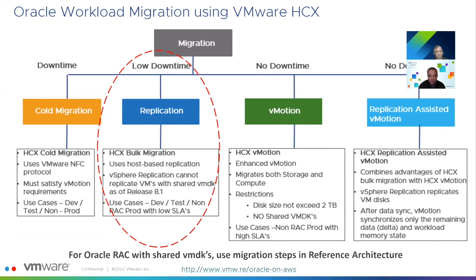HCX is included with VMware Cloud on AWS and supports live migration using vMotion and bulk replication. HCX can migrate single-instance Oracle databases from on-premises to VMware Cloud on AWS and back. However, for Oracle RAC, HCX cannot migrate shared VMDKs — the limitation is with shared VMDKs — so Oracle RAC must follow the offline migration steps in the reference architecture rather than using HCX.